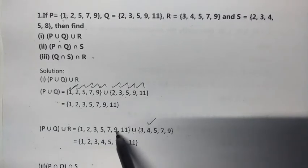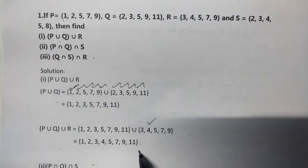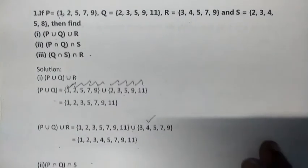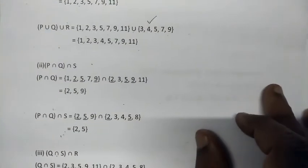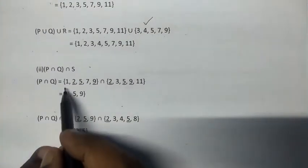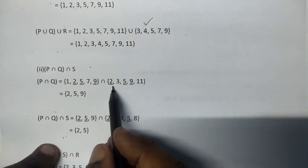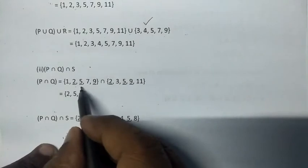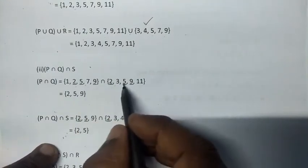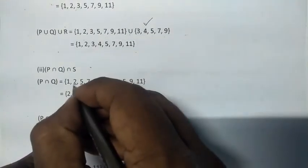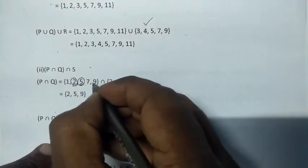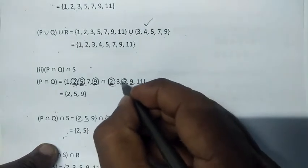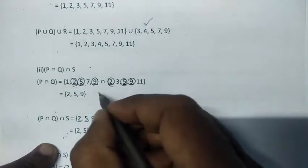Second: P intersection Q intersection S. P has 1, 2, 5, 7, 9. Q has 2, 3, 5, 9, 11. Common elements are 2, 5, 9. So P intersection Q is {2, 5, 9}.